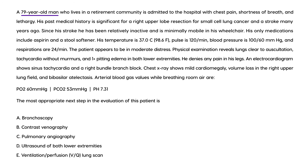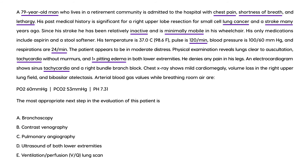Second clinical vignette: a 79-year-old man admitted to the hospital with chest pain, shortness of breath, and lethargy. Past medical history is significant for right upper lobe resection for small cell lung cancer and a prior stroke. Since his stroke he has been relatively inactive and minimally mobile in his wheelchair. His only medications are aspirin and a stool softener. Vitals: temperature normal, pulse 120, blood pressure 100/16, respirations 24. He is in moderate distress. Exam reveals lungs clear to auscultation, tachycardia without murmurs, one-plus pitting edema in both lower extremities. He denies leg pain. EKG shows sinus tachycardia; chest x-ray shows mild cardiomegaly, volume loss in the right upper lung, and bibasilar atelectasis.